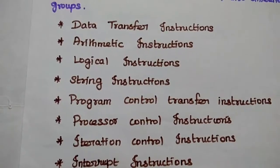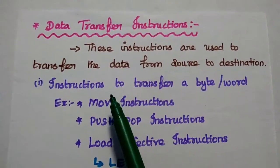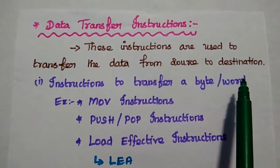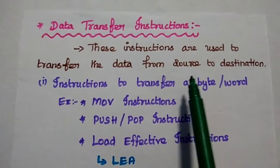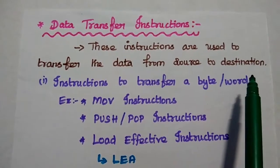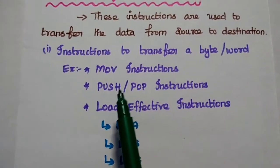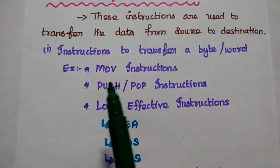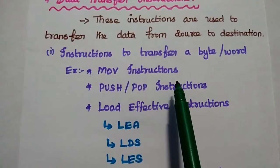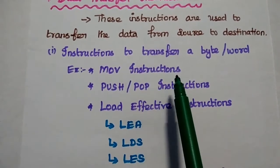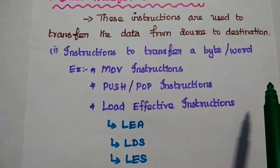Let's discuss each type. Data Transfer Instructions are used to transfer data from source to destination. Here the source can be immediate data, a register, or a memory address. The destination should be a register or memory location. We can have different types of transfer instructions — instructions to transfer a byte or word. Example: Move Instructions, which are used to transfer a byte or word from the given source to the given destination address.